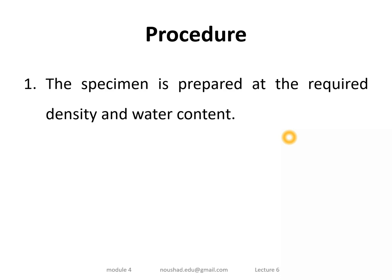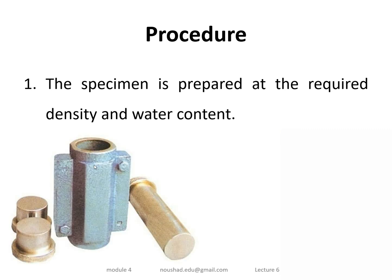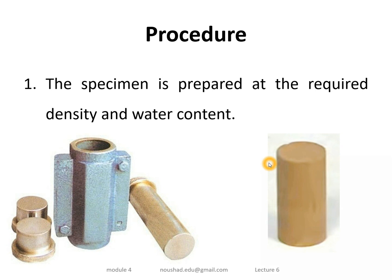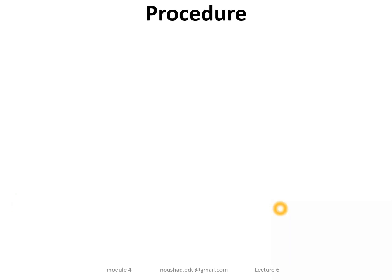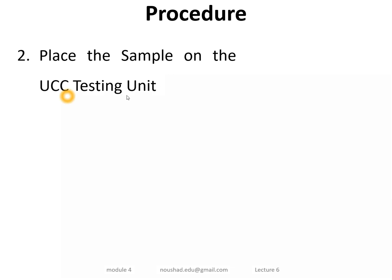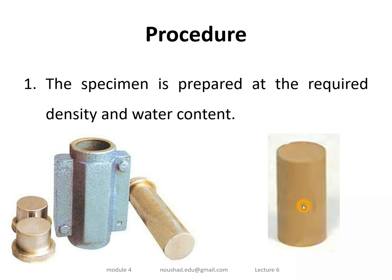A cylindrical specimen is required for the test. The water content of the soil sample is noted. The specimen has a standard height-to-diameter ratio. We have to place the prepared sample into the UCC test machine. This is similar in setup to the triaxial test but without confining pressure.